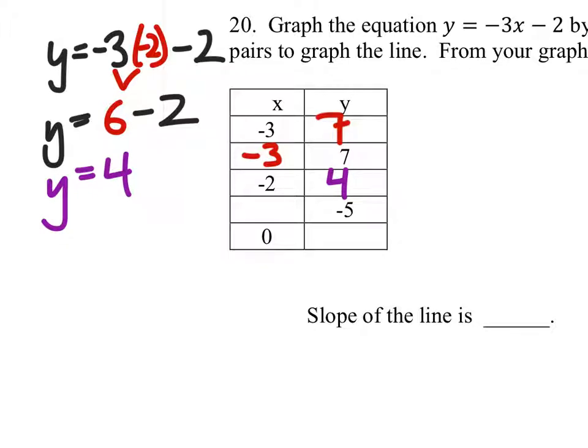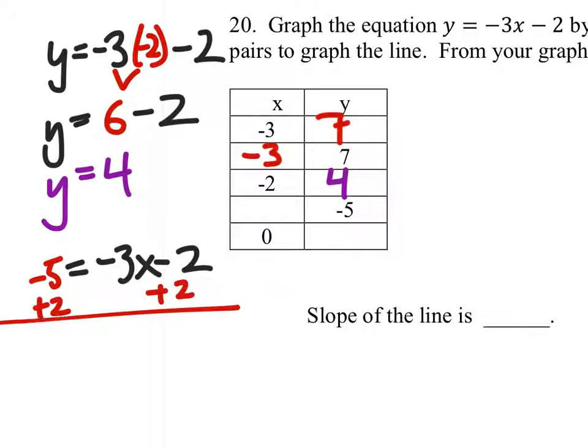The next one, we have y is negative 5. So y equals negative 3x minus 2. But y is negative 5. So I'll add 2 to both sides. And I got negative 3 equals negative 3x. Divide both sides by negative 3. And my x is 1.